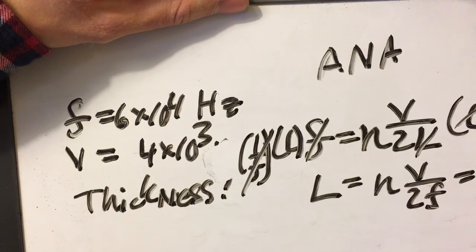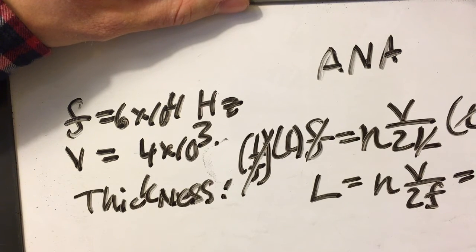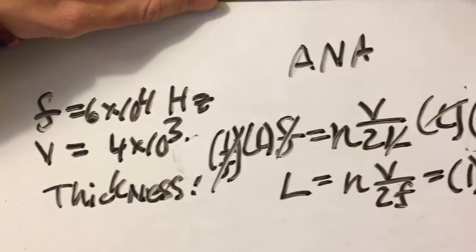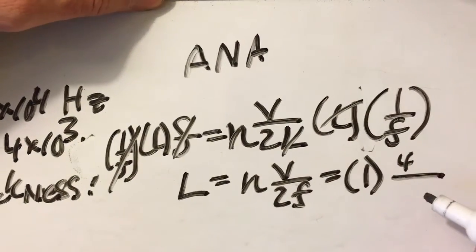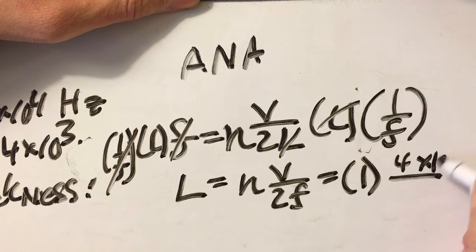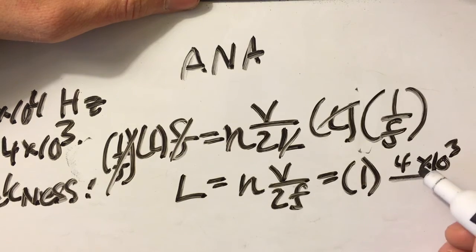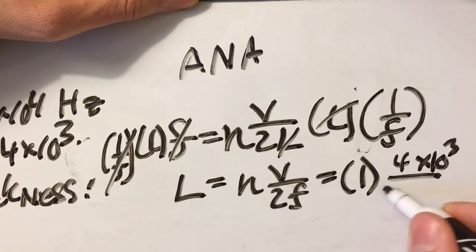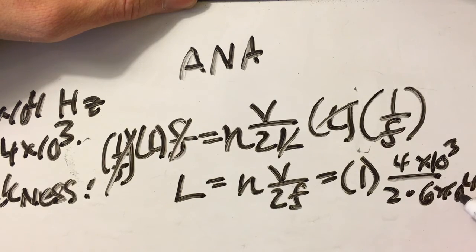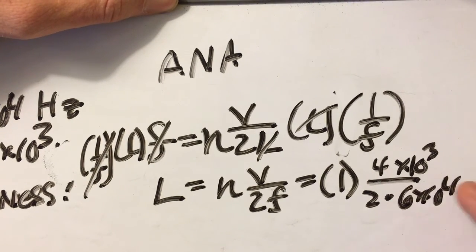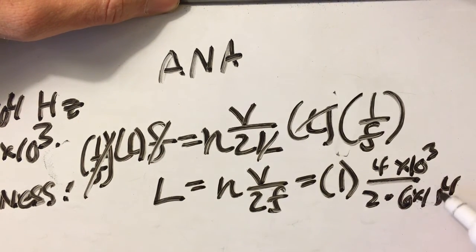One is the value for n because we're at resonance frequency, and then the velocity we have as... am I off the page a little bit? I am, my apologies. There's one, and then the velocity is 4 times 10 to the third, and then 2 times the frequency, which is 6 times 10 to the fourth. Pretty bad handwriting, but that is 6 times 10 to the fourth, I swear.